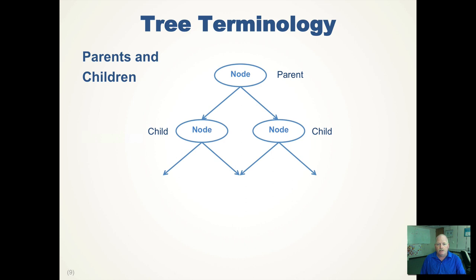Next is parents and children. The parent is the predecessor and the child is the successor. In this example, the root node has two children. Children that have the same parent are called siblings — they're on the same level and share the same parent.